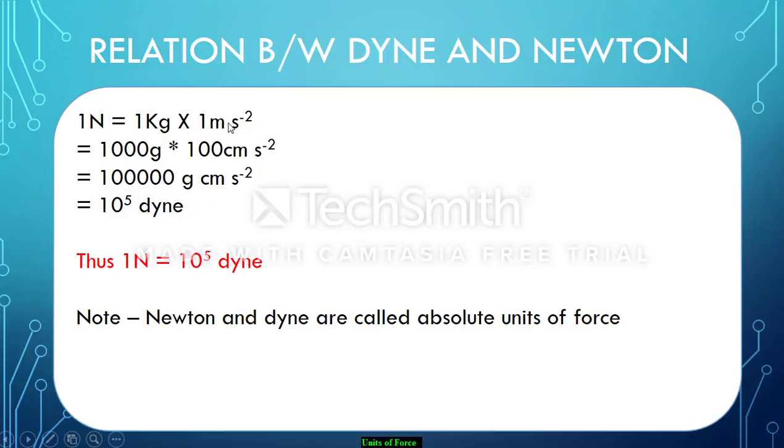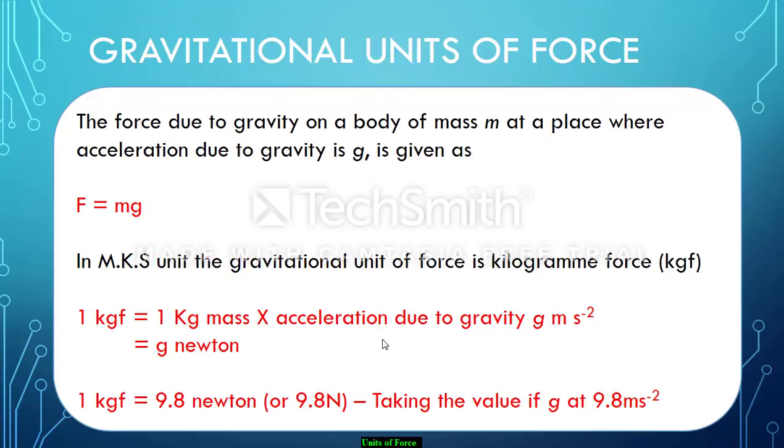Converting kg into grams, 1000 grams, meter into centimeter, 100 centimeters, this comes to 10 to the power 5 dyne. This is an important formula which all of you should by heart for all the problems. 1 Newton is 10 to the power 5 dyne. Note, Newton and dyne are the absolute units of force.